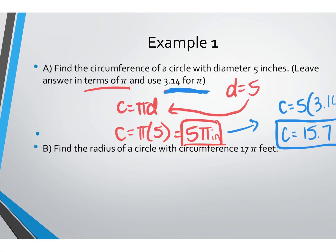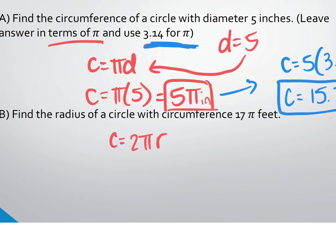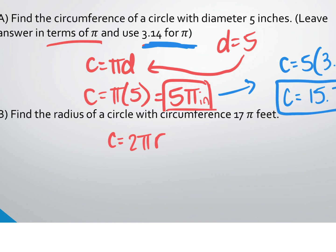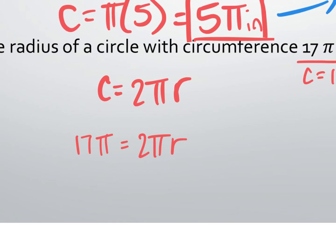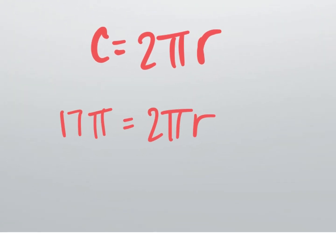Part B: find the radius of a circle with a circumference of 17π feet. Now we're starting with the circumference and finding the radius. What's the radius formula? C equals 2πr. We know C is 17π, so plug in: 17π equals 2πr. We're solving for r — pi is just a number, so treat it like one.